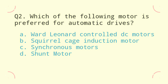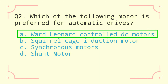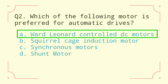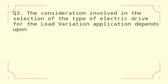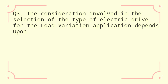Question 2: Which of the following motors is preferred for automatic drives? a) Ward Leonard control DC motors, b) squirrel cage induction motors, c) synchronous motors, d) DC motors. The correct answer is Ward Leonard control DC motors.